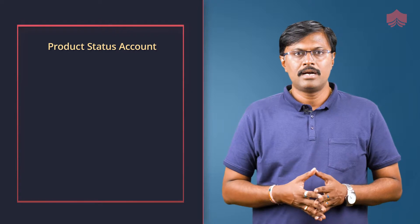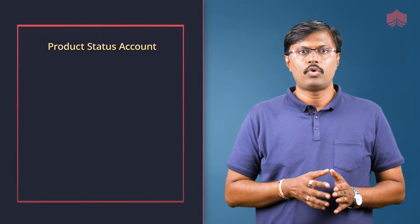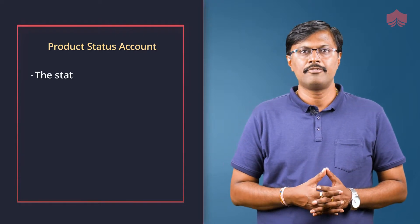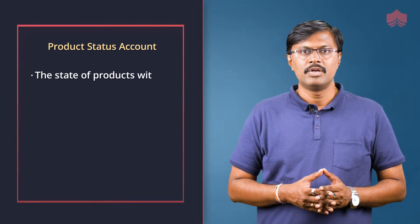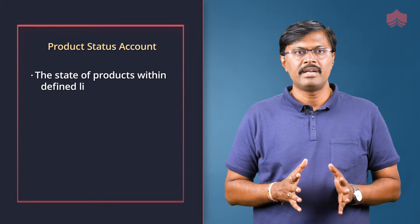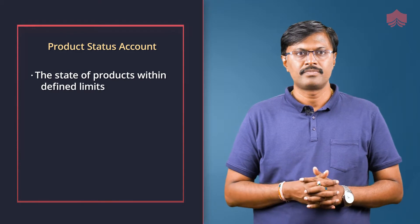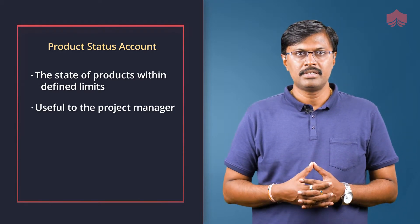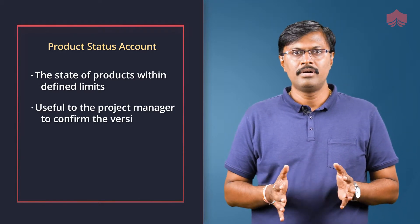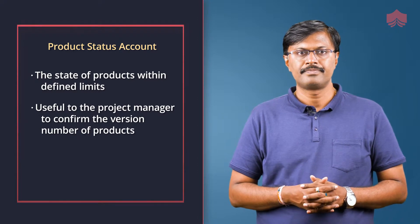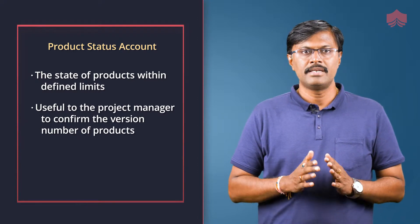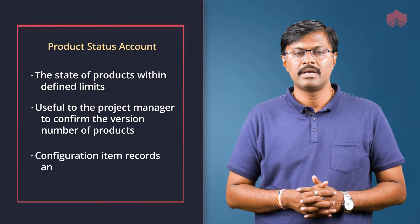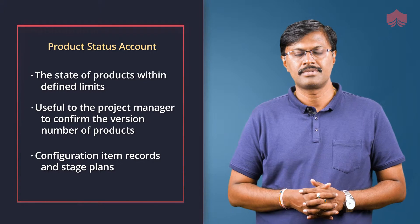Product status account provides information about the state of products within defined limits. It is useful to the project manager to confirm the version number of products, and it is derived from configuration item records and stage plans.